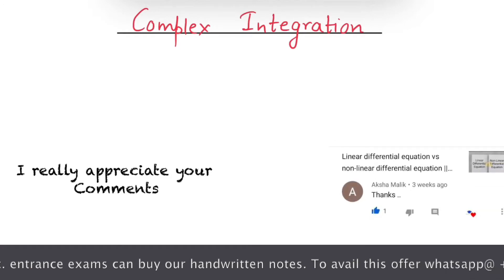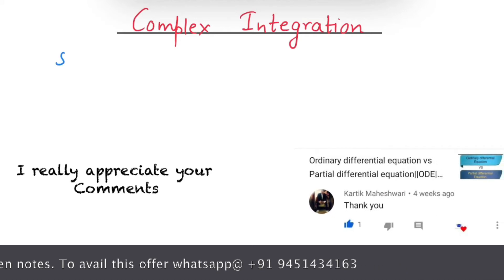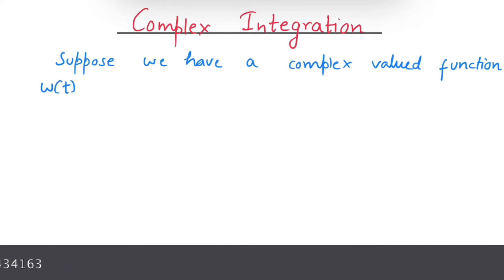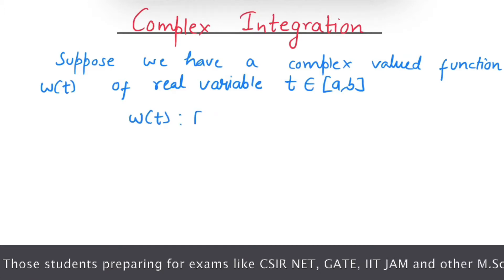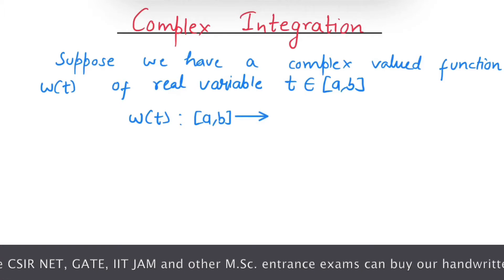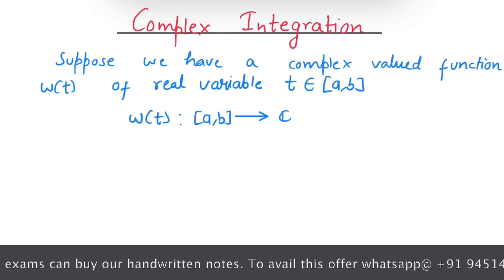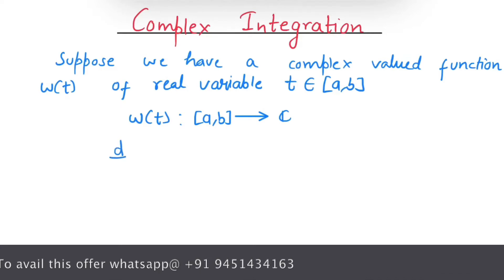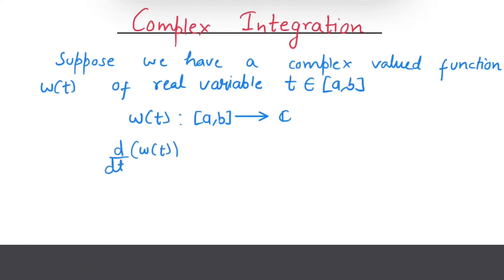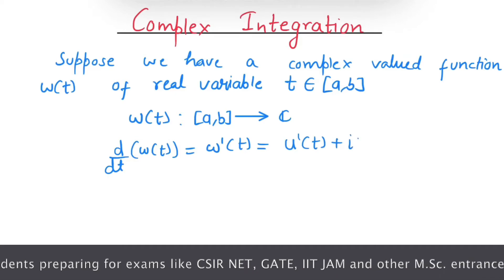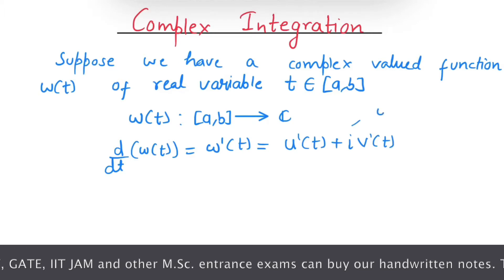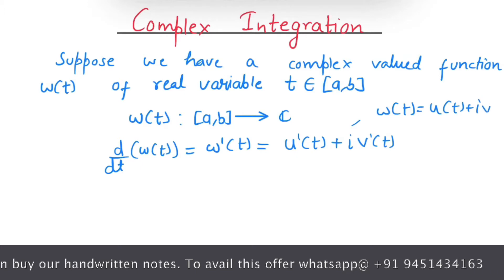Suppose we have a complex valued function W(t) of real variable t, belonging to interval [a, b], defined as a map from interval [a, b] to the complex plane C, where W(t) = u(t) + i·v(t). The derivative of W(t) at point t is given by d/dt of W(t), denoted W'(t), and equals u'(t) + i·v'(t).